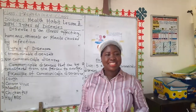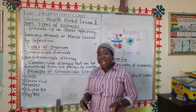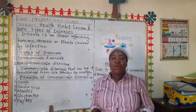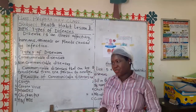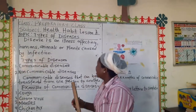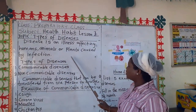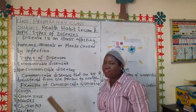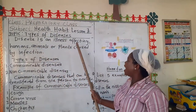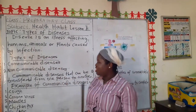First of all, we are going to look at the meaning of disease. Even a little child of two years knows what gets us at home. Disease is an illness affecting humans, animals, or plants caused by infection.